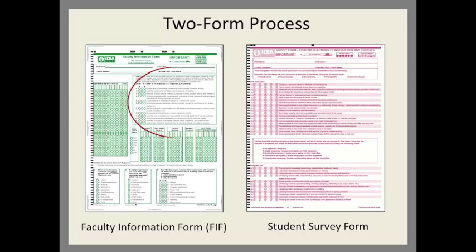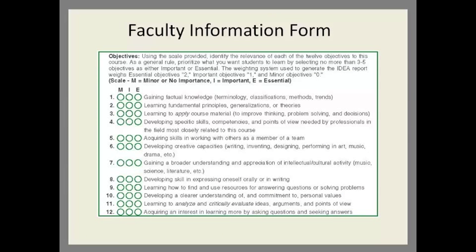The same set of 12 learning objectives is listed on each form. Faculty select which objectives they targeted in the course as essential or as important, while the other objectives are marked as of minor or no importance. Students rate the progress they made on the learning objectives. This is the most important part of the Faculty Information Form: the 12 general learning objectives.